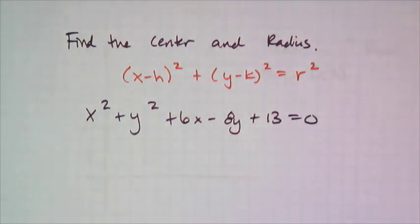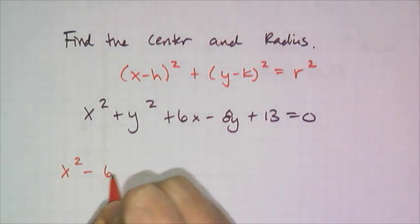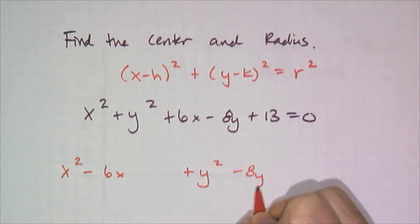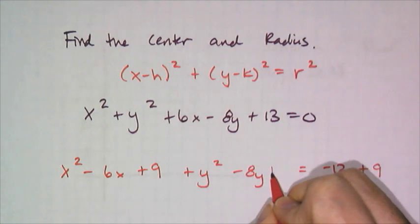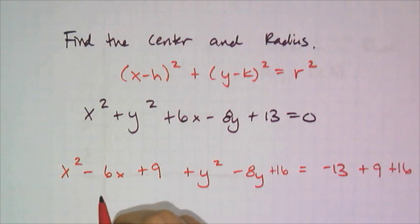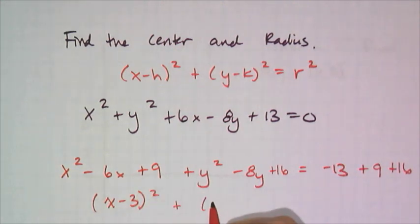If I want to find the center and radius, I have to put it into the (x-h)² + (y-k)² = r² form, which means I need to do a double completing the square. I have x² - 6x and y² - 8y = -13. I rearranged everything to prepare for my double completion. Negative 6 divided by 2 is 3, squared that is 9. Add 9 to both sides. Negative 8 divided by 2 is -4, squared is positive 16. Add 16 to both sides.